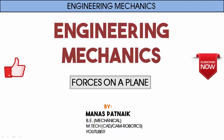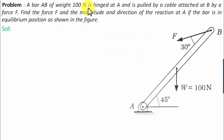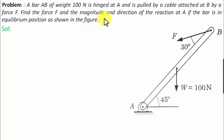Hi there guys, hope you're doing well. This is your friend and tutor Manas. A bar of weight 100 Newtons is hinged at A and is pulled by a cable attached at B by a force F. Find the force F and the magnitude and direction of the reaction at A if the bar is in equilibrium position as shown in the figure.